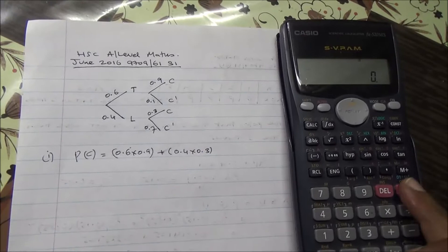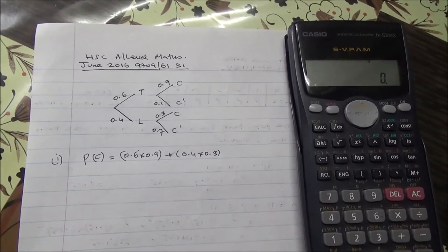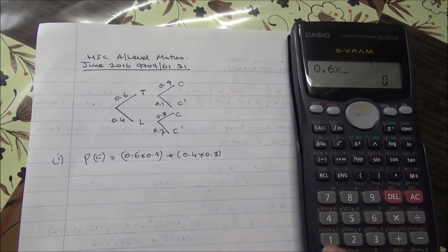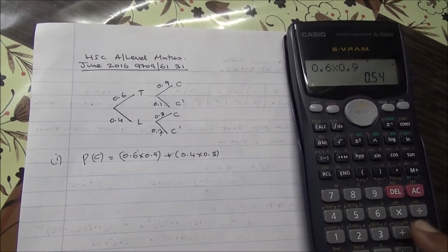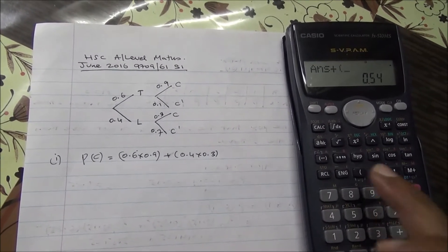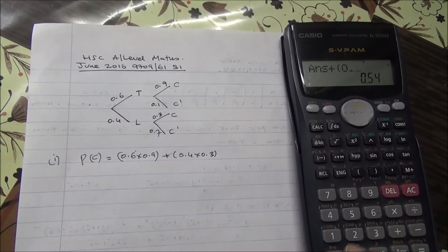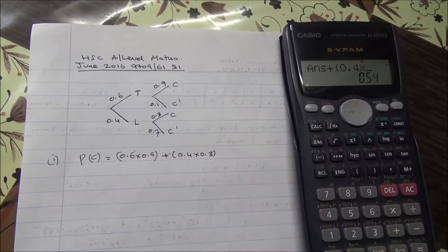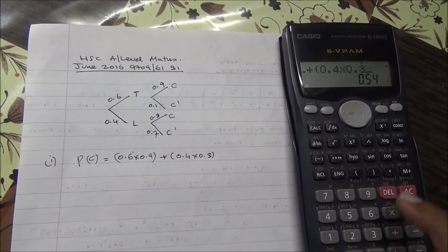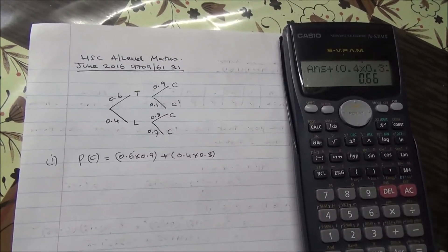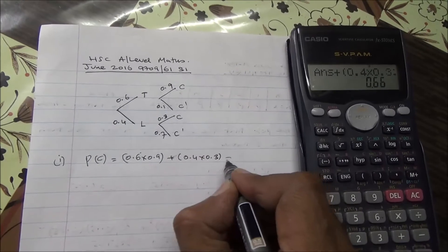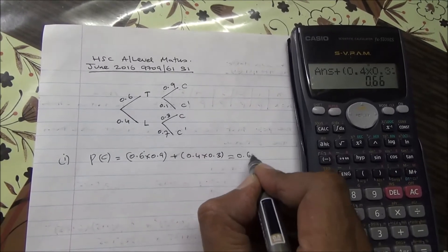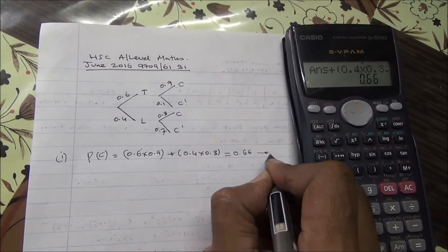So 0.6 times 0.9, plus 0.4 times 0.3, and that's going to give us 0.6. So there we are for the first part.